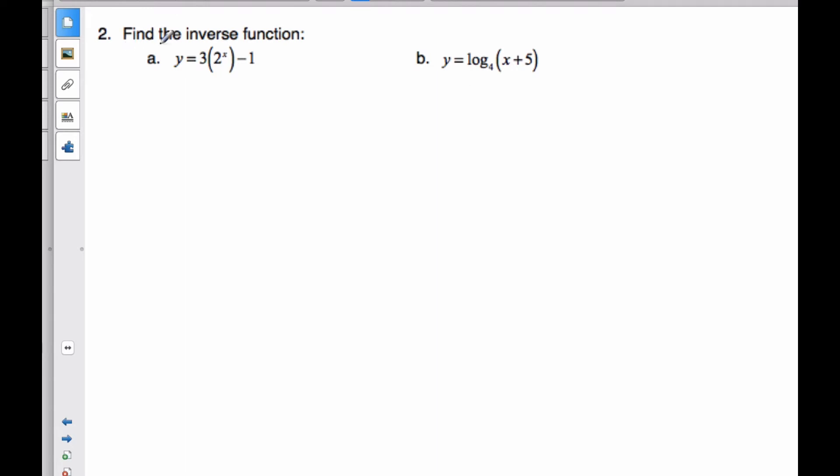Okay, and so now we want to find the inverse function as given here. Well, I know to find the inverse function, I have to switch my x and y. 3 times 2 to the y minus 1, and I have to solve for y. Well, let's bring the 1 over. It's equal to 3 times 2 to the y. I'm going to divide by 3, and so now I have 2 to the y is equal to x plus 1 over 3.